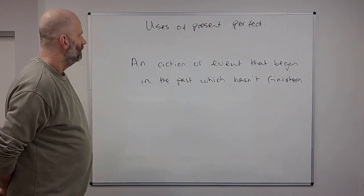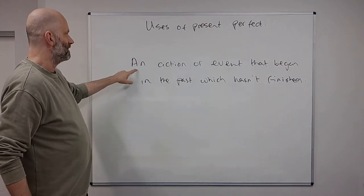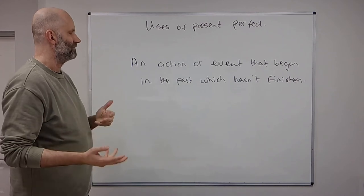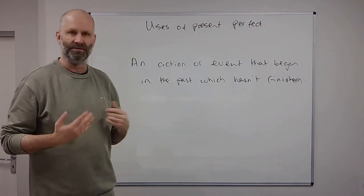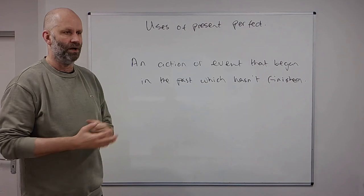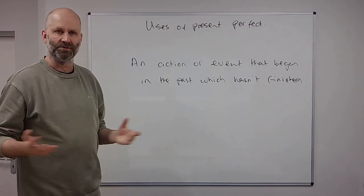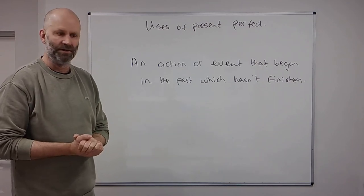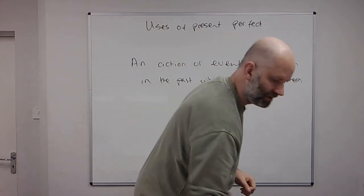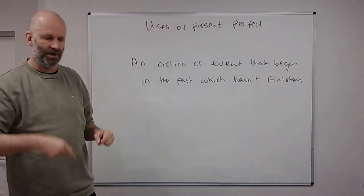So the uses of the present perfect. The first is an action or event that began in the past which hasn't finished. So for example, I've lived in Nottingham for 19 years. So that's something which began some time ago, but it hasn't finished yet.